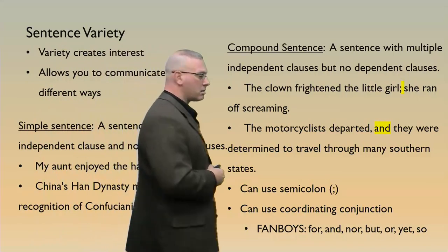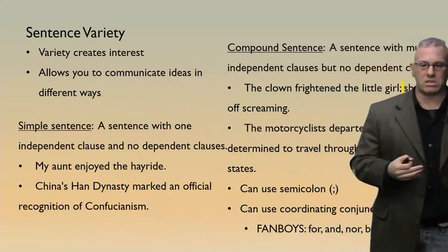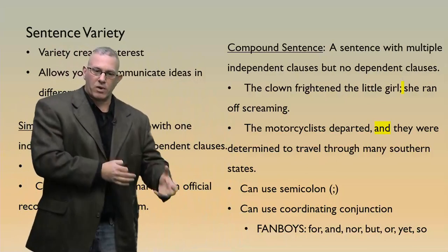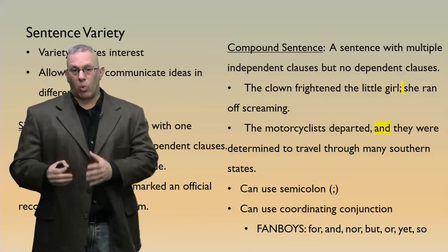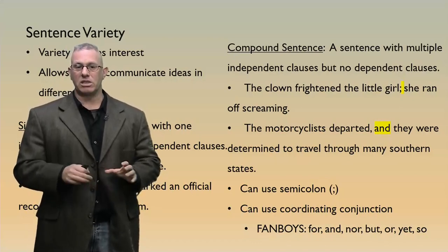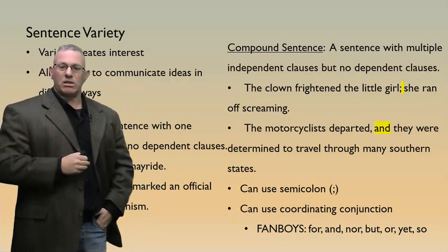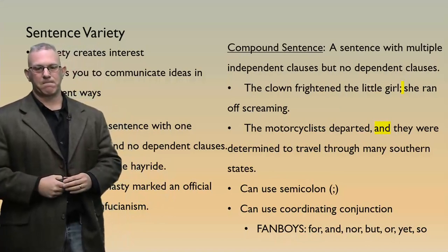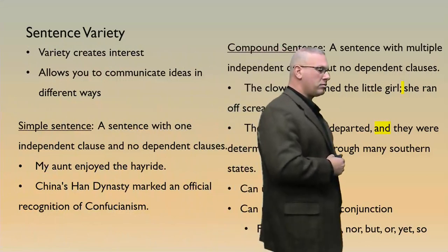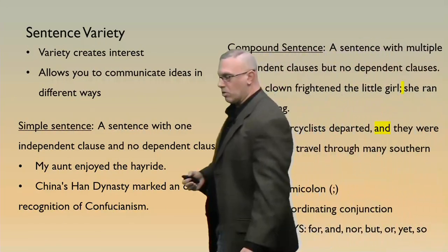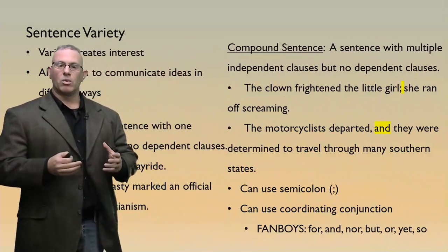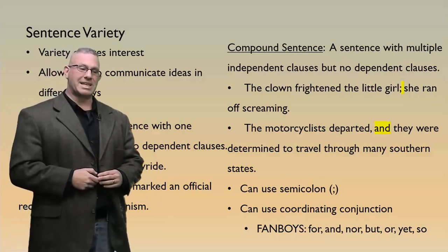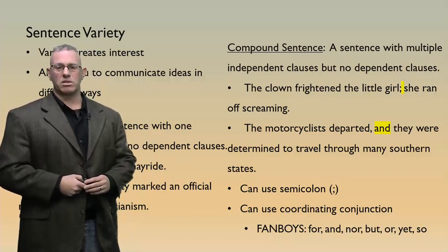There are seven coordinating conjunctions: for, and, nor, but, or, yet, so — sometimes remembered as FANBOYS. When these connect two independent clauses, we use a comma. Two independent clauses connected with a coordinating conjunction produces a compound sentence. Compound sentences are just as important to use in our papers as simple sentences are.